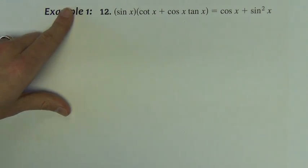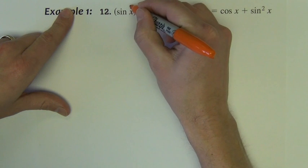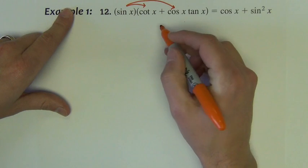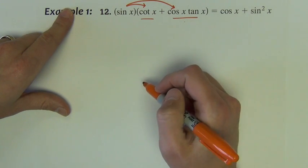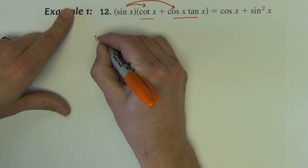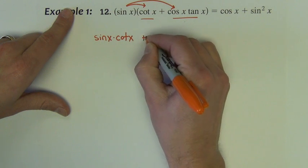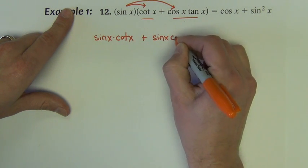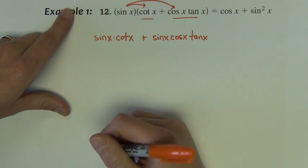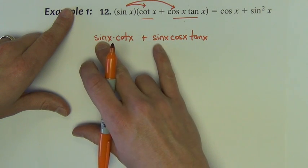Well, I could begin this problem, I see an opportunity to do some algebra. I could begin by distributing the sine x to each of these two terms. So there's the first step, I've multiplied the sine into both terms.